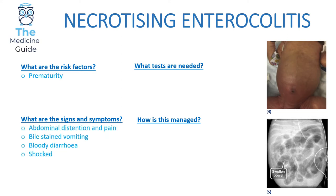The child will present with abdominal distention and obvious abdominal pain, bile-stained vomiting, and bloody diarrhoea — it might be described as haematochezia in the nappy, or blood-specked stools — and the child will be obviously shocked.